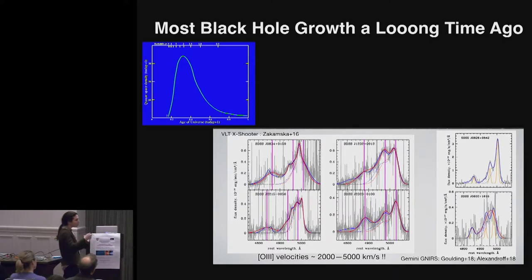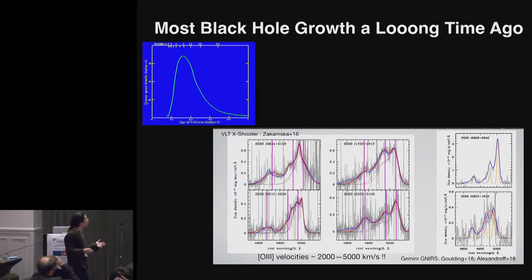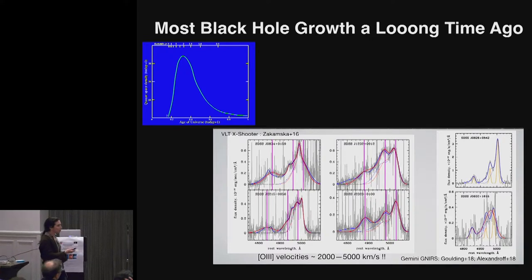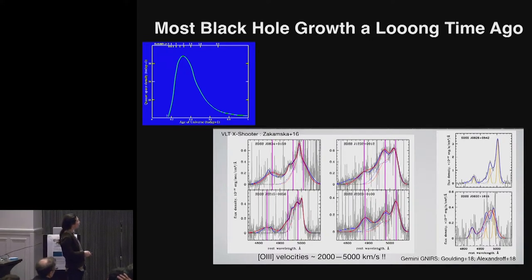So can we see evidence of these outflows if we look back in time when most of the galaxies, most of the stars were forming and most of the black holes were growing?